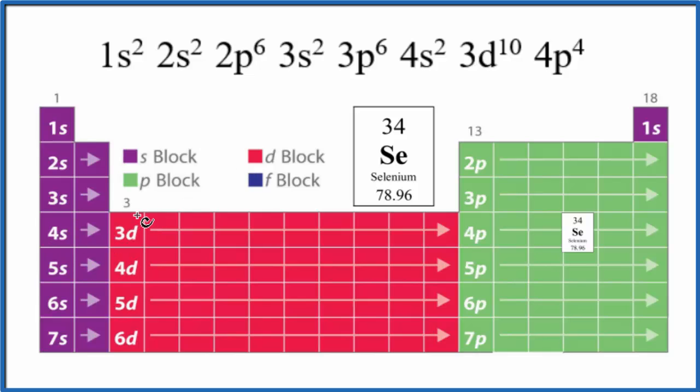From the 4s² we go to the 3d. D can hold up to ten, so we have 3d¹⁰. Then we have 4p, but we only need four more electrons to have the complete configuration for Se. So we have 4p¹, 2, 3, 4. That's the selenium, so we have 4p⁴.